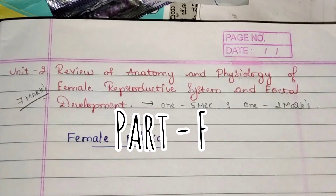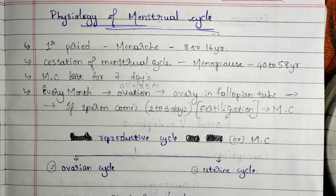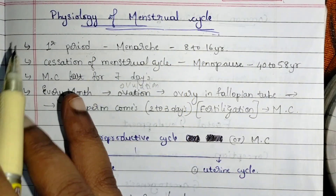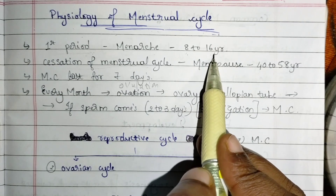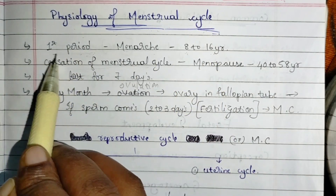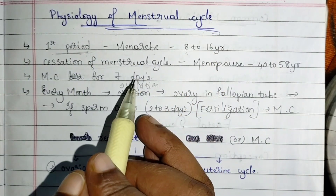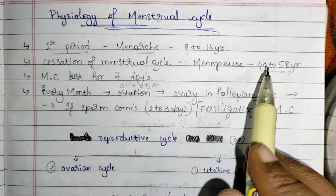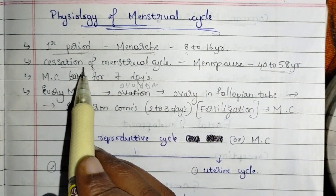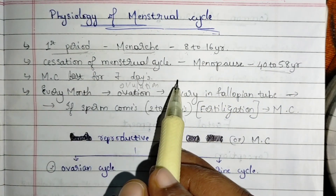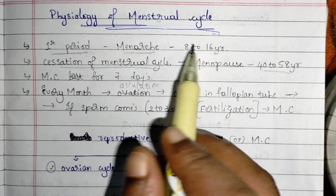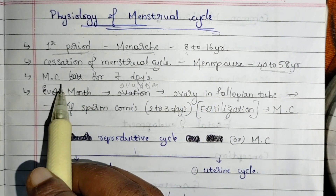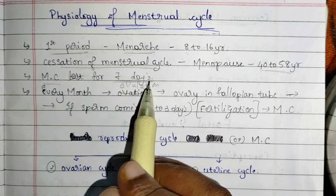Hello guys, it's Unit 2 Part F. Today's topic is the physiology of the menstrual cycle. At later puberty age, around 8 to 16 years, the girl gets her first menstrual cycle or first menses, known as menarche. At the age of 40 to 58 years, women reach the end of the menstrual cycle — the cessation of menstruation — known as menopause. Normally, this menstrual cycle lasts for 7 days.